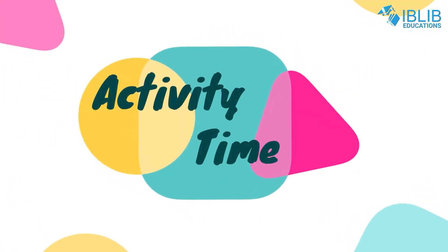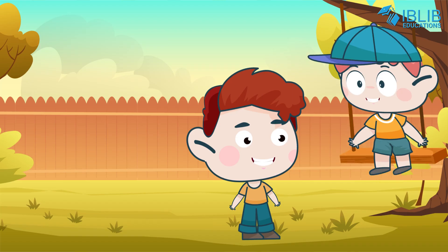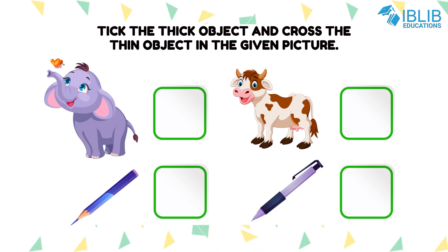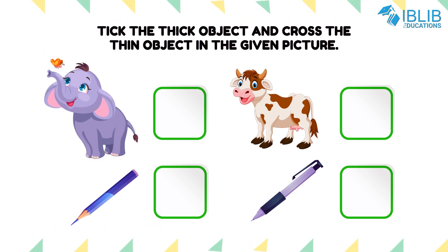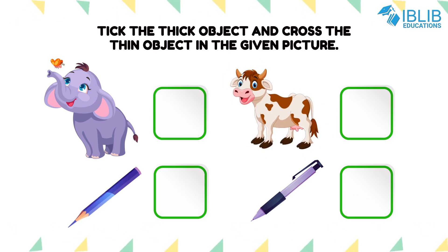Activity Time! Take the thick object and cross the thin object in the given picture. Elephant and cow. Pencil and pen.